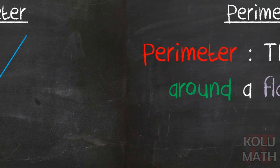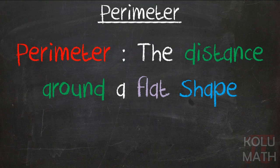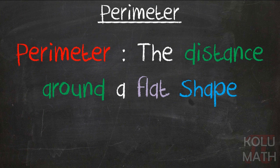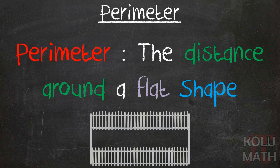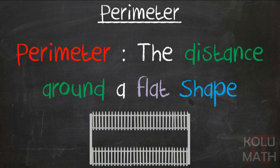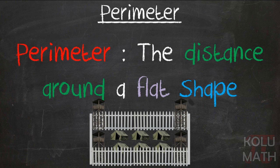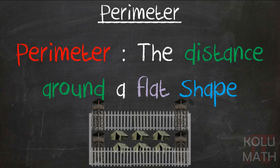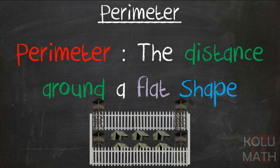And to reiterate, perimeter is the distance around a flat shape. And you can think about that as a fence. You know, when I was a kid, I used to think about it as like an army camp. And you always had the guard posts that were around the perimeter. So whatever works for you, just find a way to remember it and remember it.